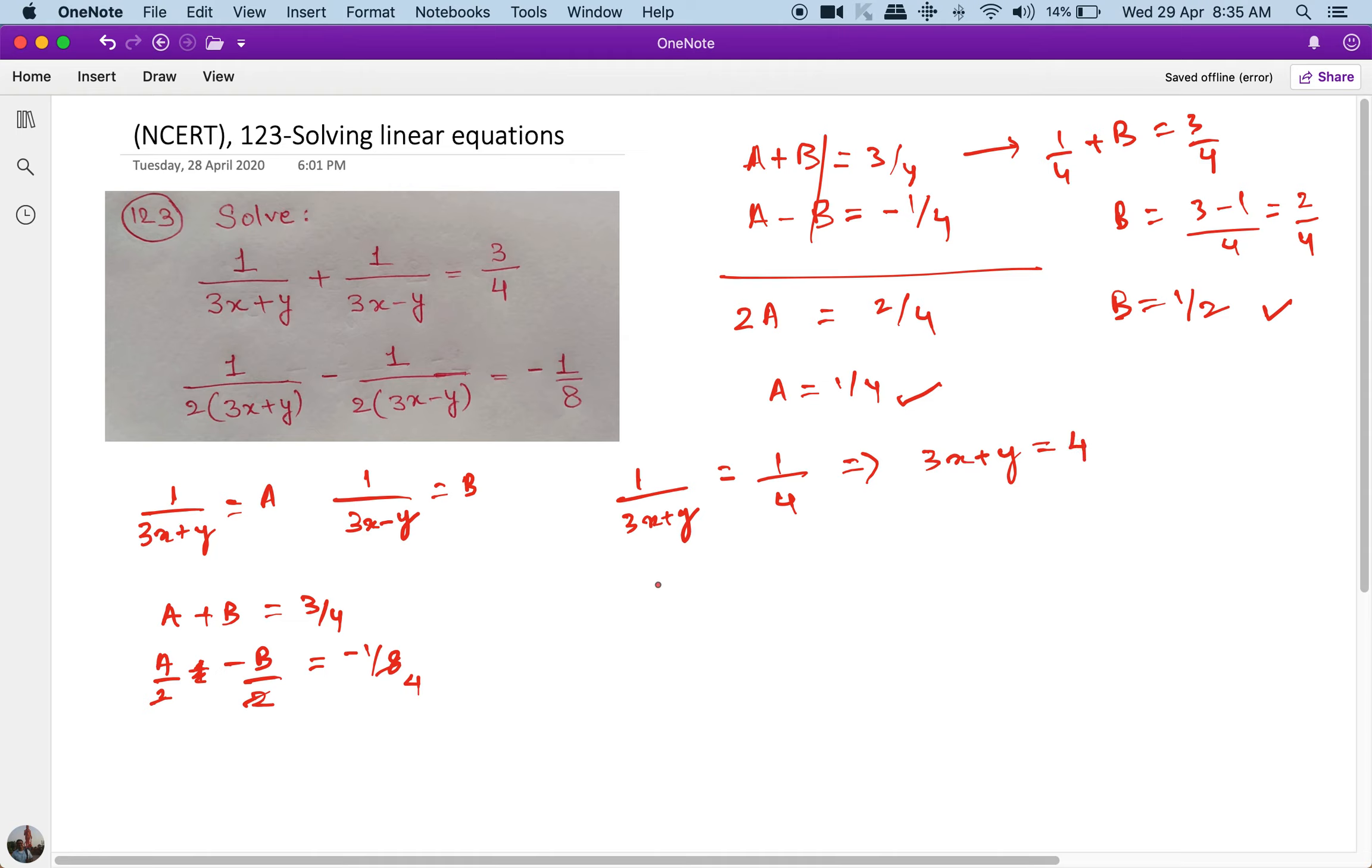Similarly, I have 1 upon 3x minus y is equal to half, and this will mean 3x minus y is equal to 2, again by cross multiplication.